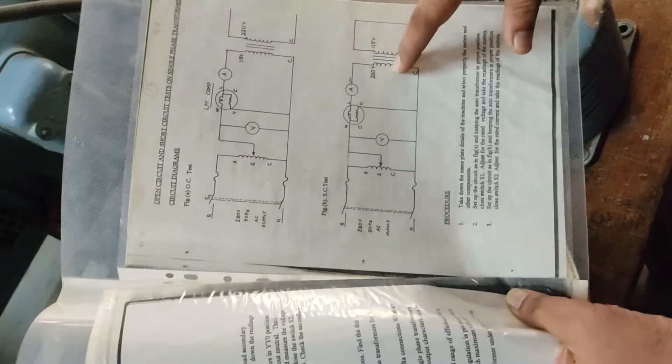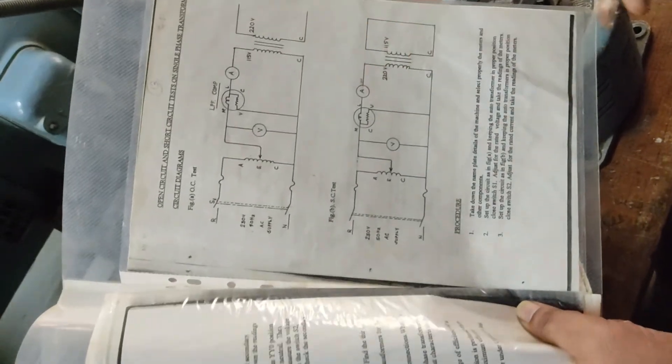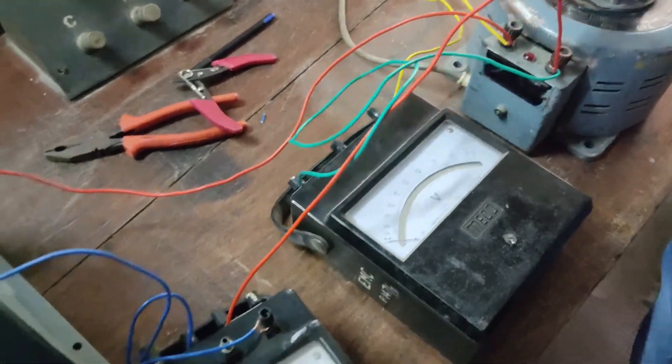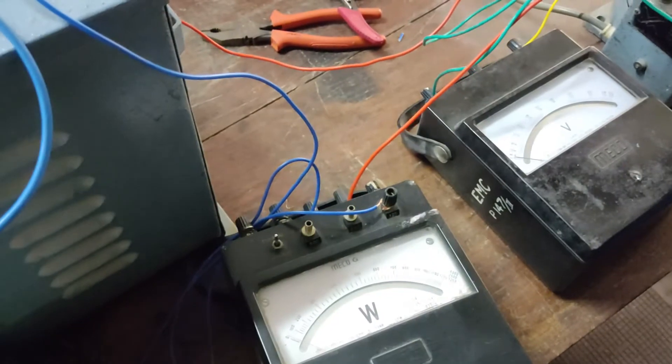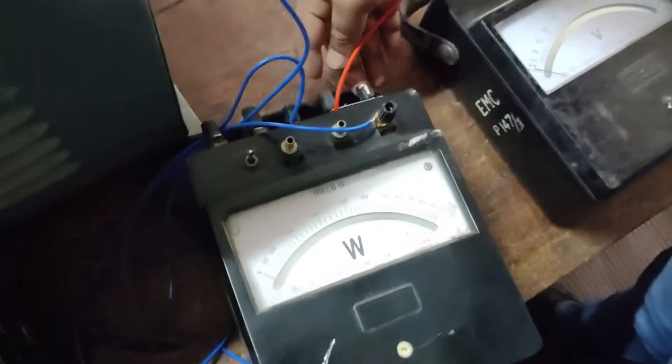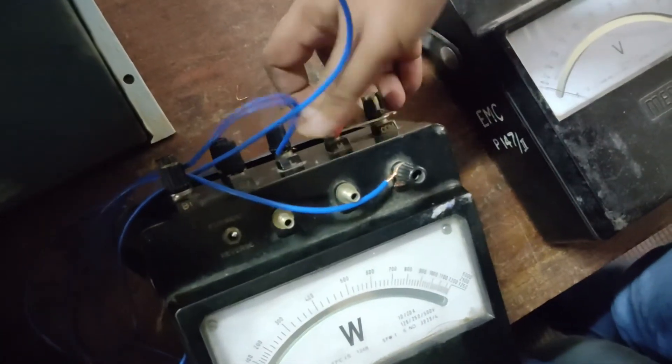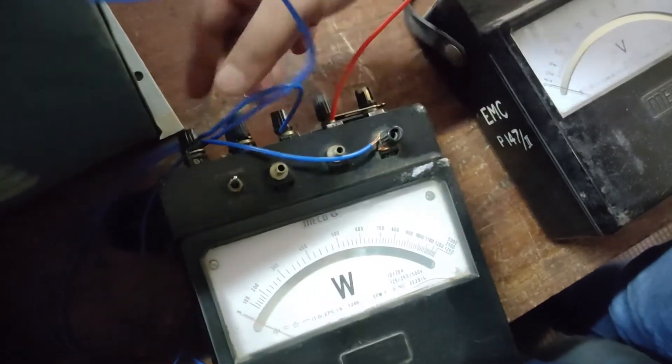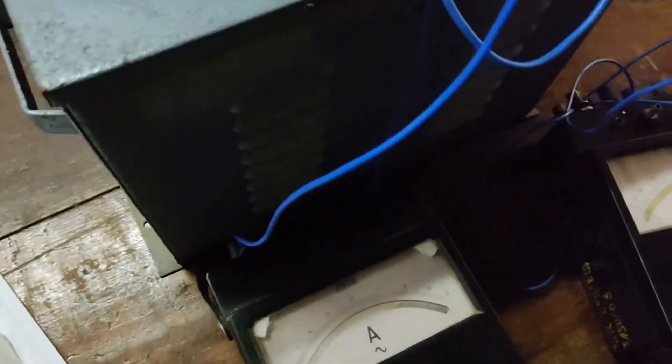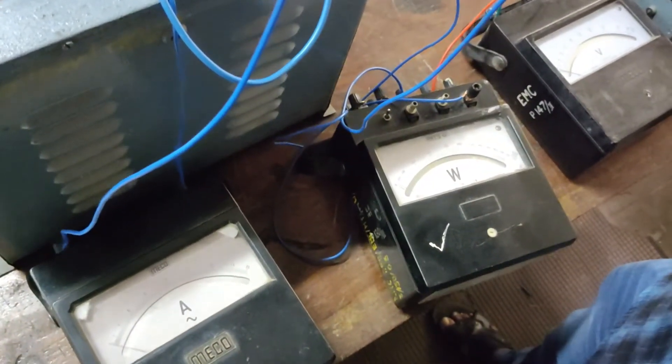This is the line connected from the auto transformer to M main of the wattmeter. Here MC short is connected, MC shorted, and the line is connected. This is the line wire connected to the ammeter, 0 to 10 ampere or 20 ampere range.